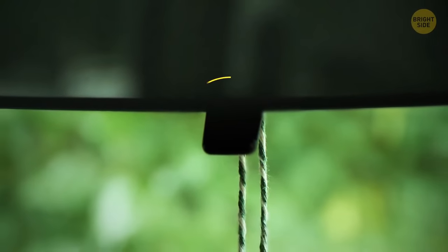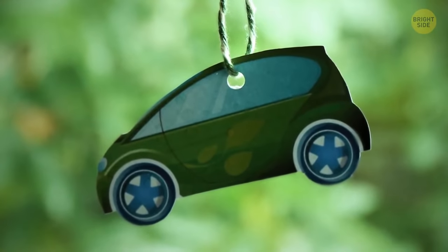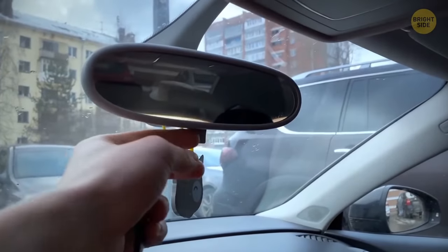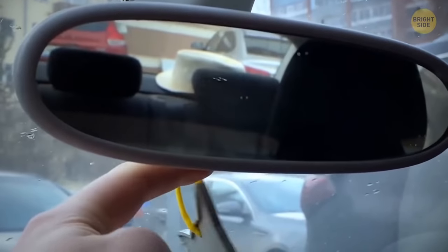The tab on the rearview mirror has obvious functions. It holds your air freshener, that cute toy. But in reality, it was meant to be a tumbler between day and night mode. It reduces the glare from the car behind you, so you can't be blinded.